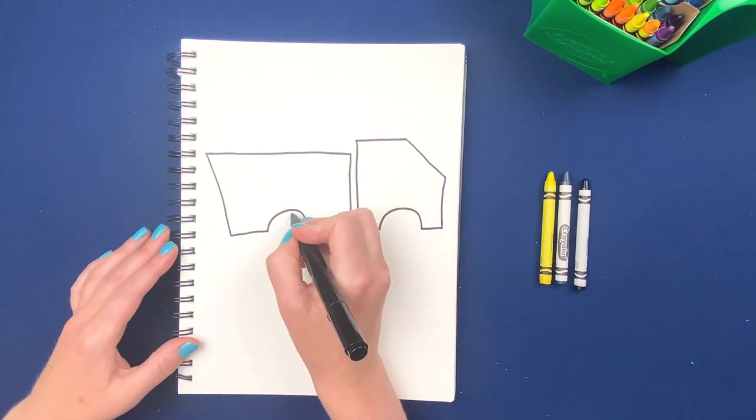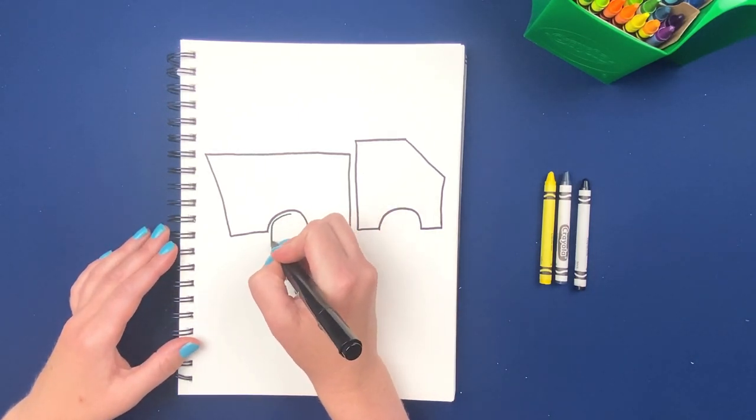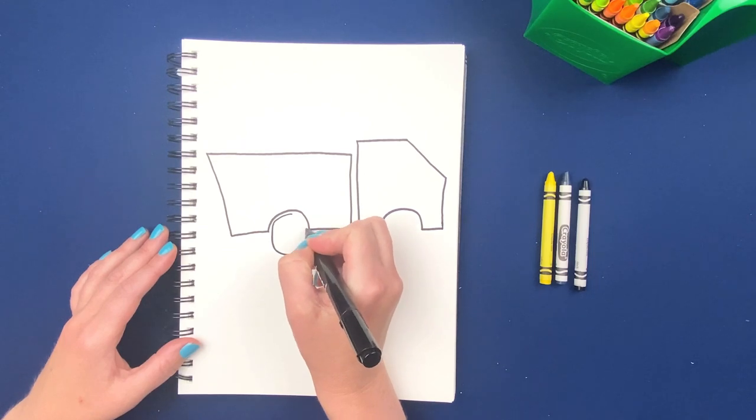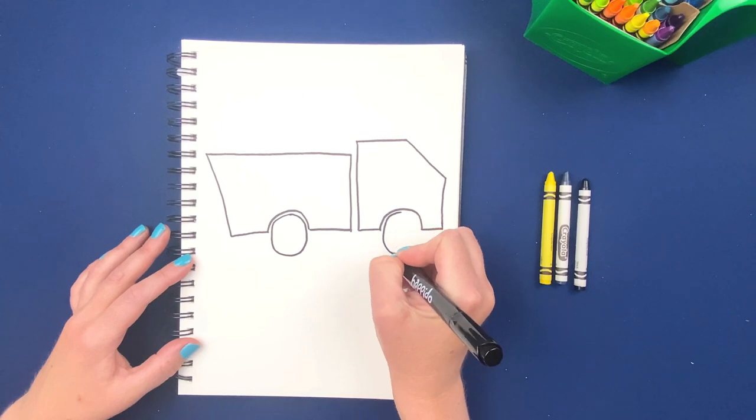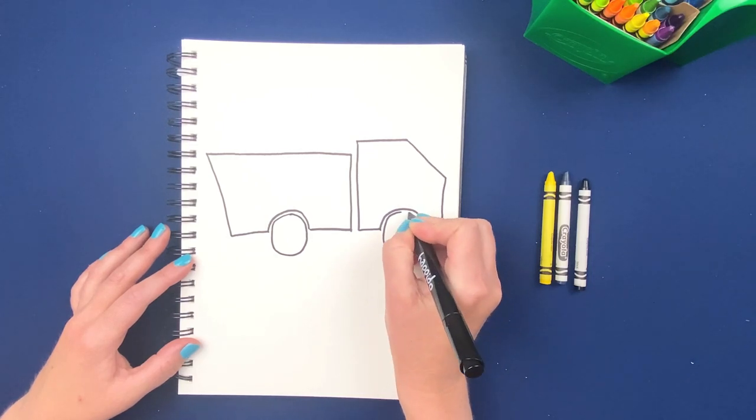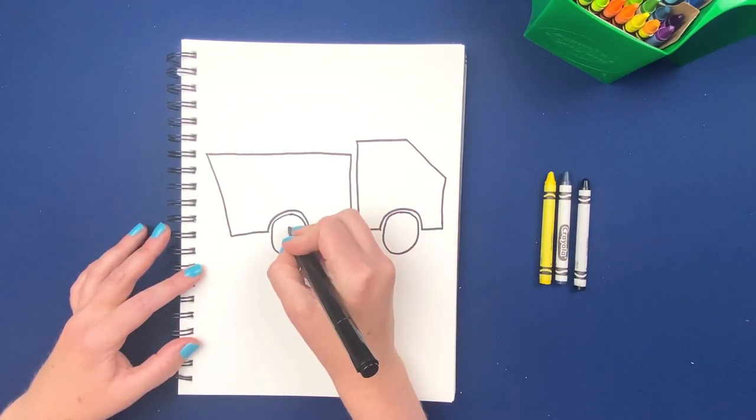Now we're going to go back in. Put those big tires in. Big circle. Another big circle. And we're going to draw the hubcaps in.